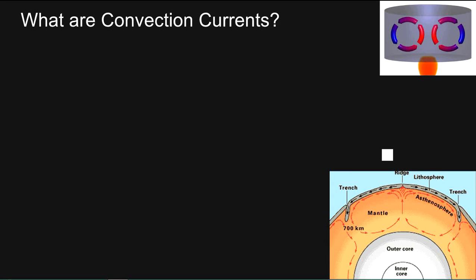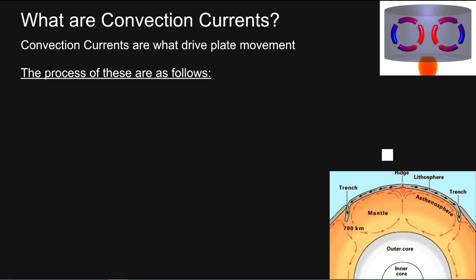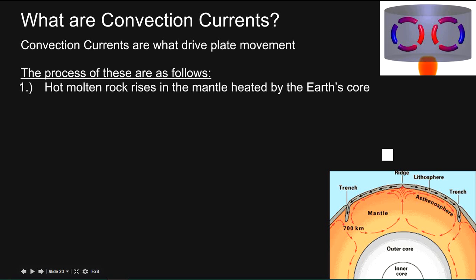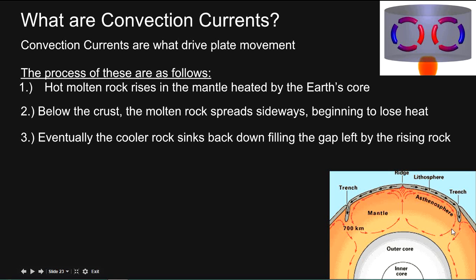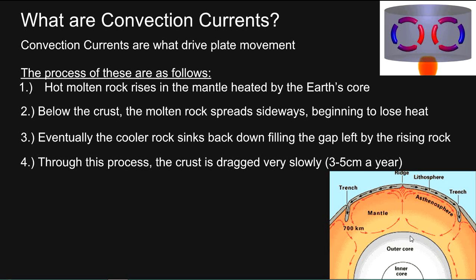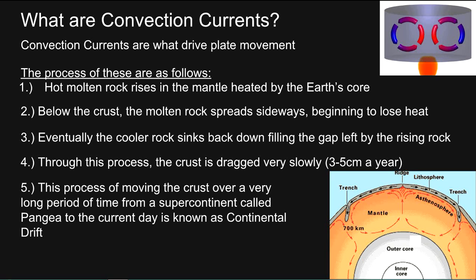Convection currents are what drive plate movement. Hot molten rock rises in the mantle, heated by the Earth's core. Below the crust, the molten rock spreads sideways, beginning to lose heat. Eventually the cooler rock sinks back down, filling the gap left by the rising rock. Through this process the crust is dragged very slowly — around 3 to 5 cm a year. This process of moving the crust over a very long period of time, from a supercontinent called Pangaea to the current day, is known as continental drift.